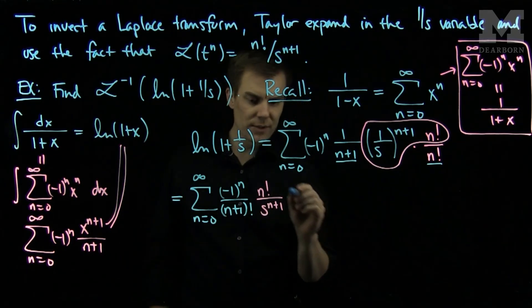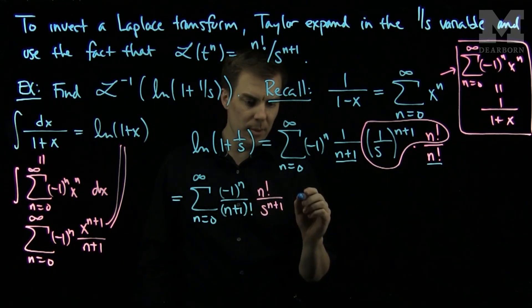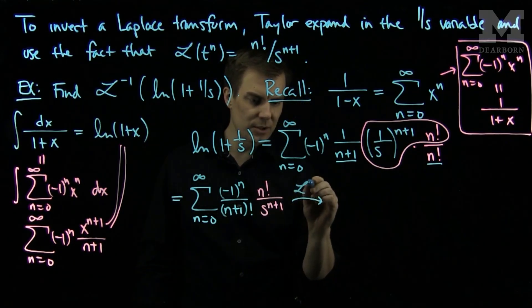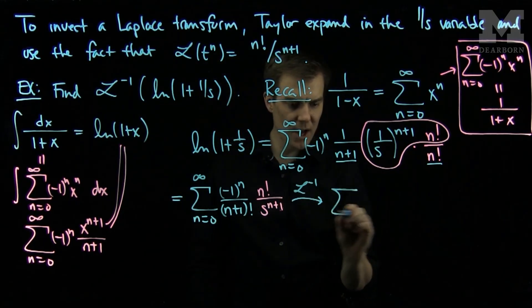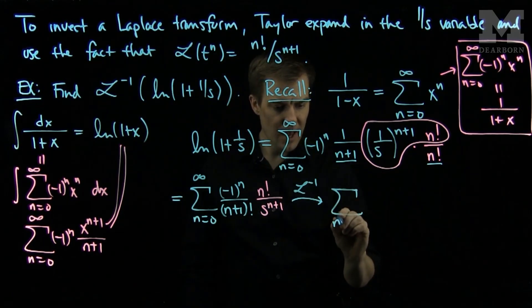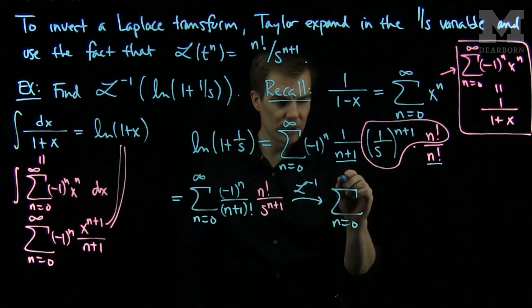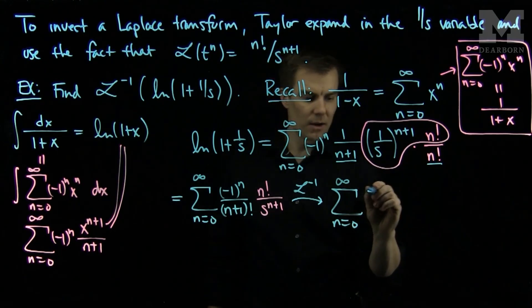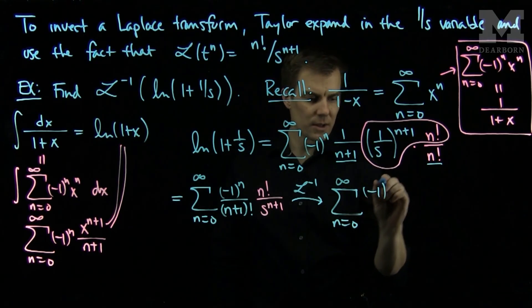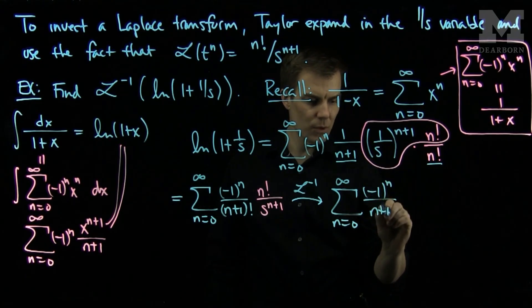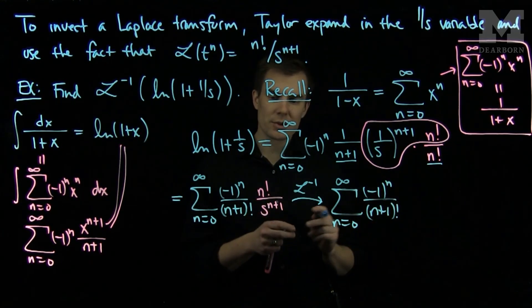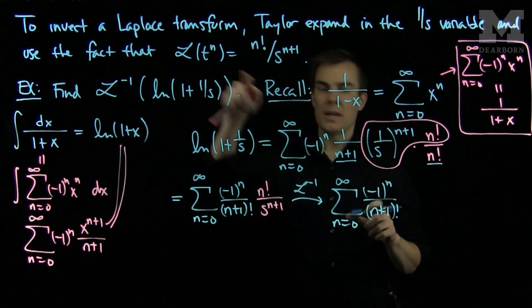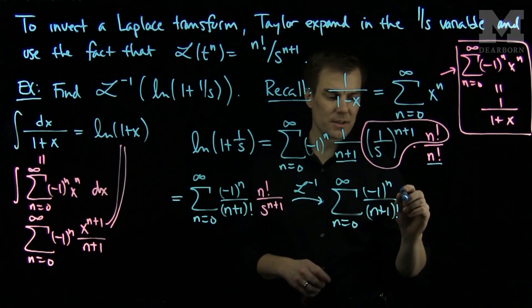I will inverse Laplace transform the pink terms. When I inverse Laplace transform this series, I will have the sum, n goes from 0 to infinity, of negative 1 to the n over n plus 1 factorial. The inverse Laplace transform of n factorial over s to the n plus 1 is t to the n.